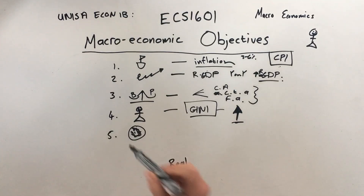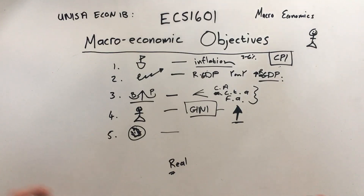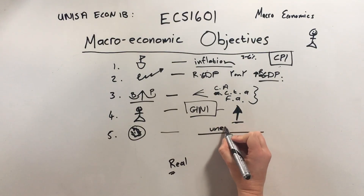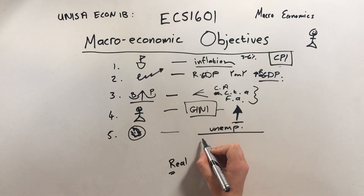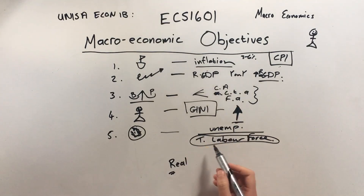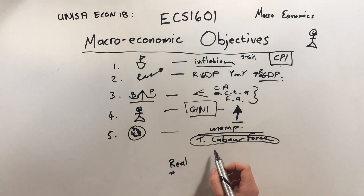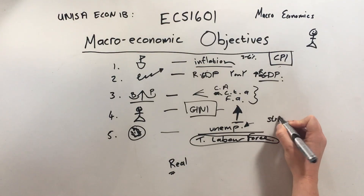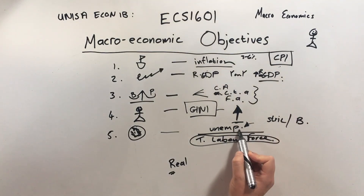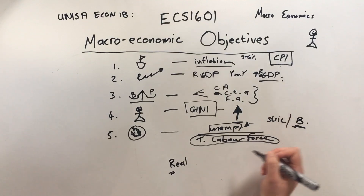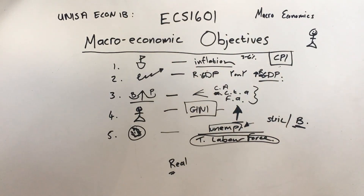Last but not least is full employment. You'll almost never have full employment, but the government aims for it. To measure unemployment, you divide the number of unemployed people by the total labor force — everybody willing and able to work, roughly between the ages of 16 and 65, known as the economically active population. There are two definitions: the strict or narrow definition includes everybody that's been looking for work in the past three months, while the broad definition includes just everybody who's unemployed.